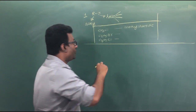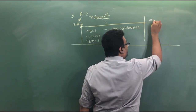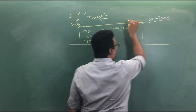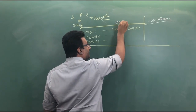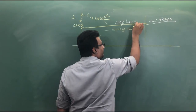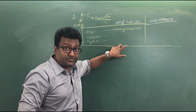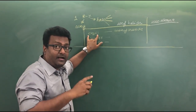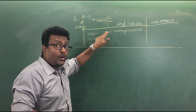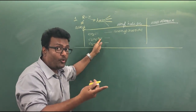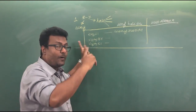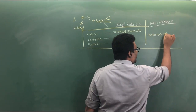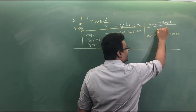In the IUPAC naming system, we call it haloalkane. So chloromethane, bromoethane, chloropropane — that's how the IUPAC names are formed. I want you to write these down yourself.